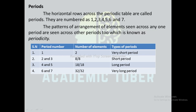In the modern periodic table, there are four types of periods. Period 1, where there are only two elements, is counted as the very short period. Periods 2 and 3, which contain 8 elements each, are known as the short periods. Periods 4 and 5, which contain 18 elements each, are known as the long periods. Periods 6 and 7, which consist of 32 elements each, are known as the very long periods.